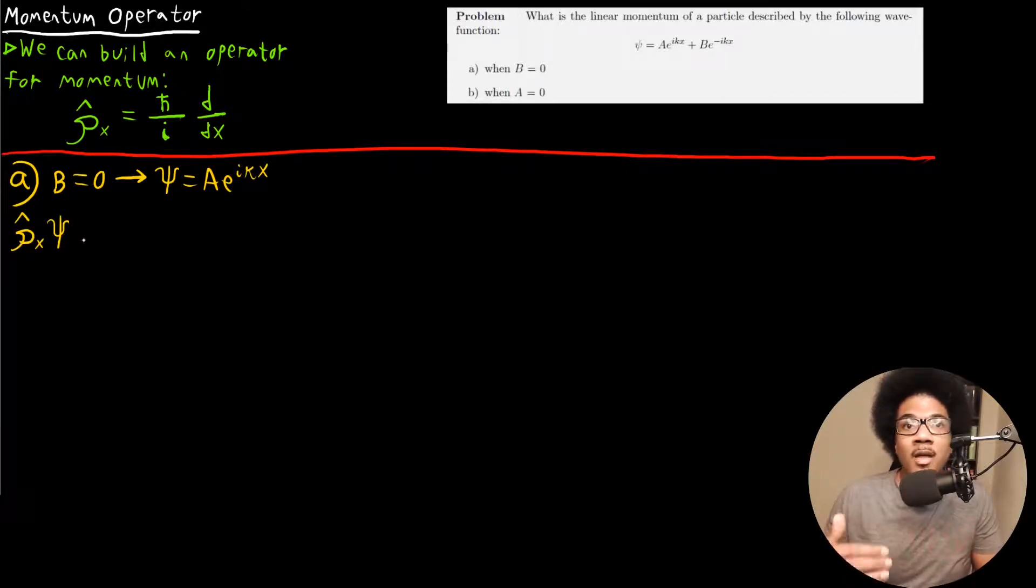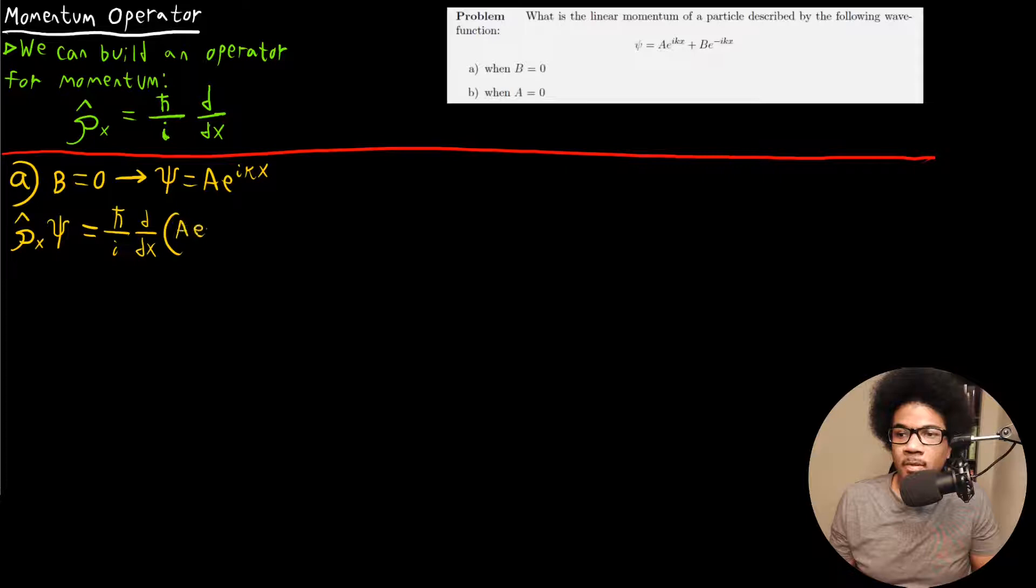Doing this, we're going to use this operator, h bar over i d/dx, and put our wave function in there, A e^(ikx). Taking this first derivative, since we have e^(ikx), that first derivative is just going to be ik. We'll bring down ik, and we'll have A e^(ikx).